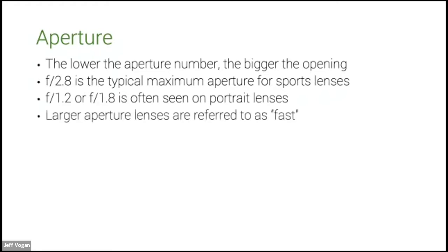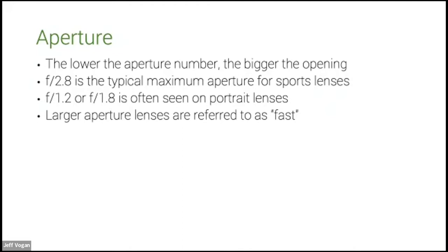Larger aperture lenses are referred to as 'fast.' The reason for that is when you have a big opening, it lets in a lot of light, so you don't need to have the shutter open longer to get a proper exposure. A big opening means you can take a faster picture, and typically the faster the lens, the more expensive it is.